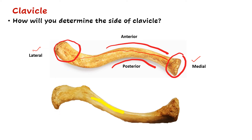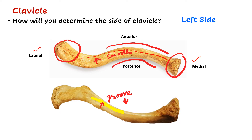To identify superior and inferior surfaces: the superior surface is smooth, whereas the inferior surface has a groove known as the subclavian groove. Using all these features you can determine the side of the clavicle - in this example, the clavicle belongs to the left side.